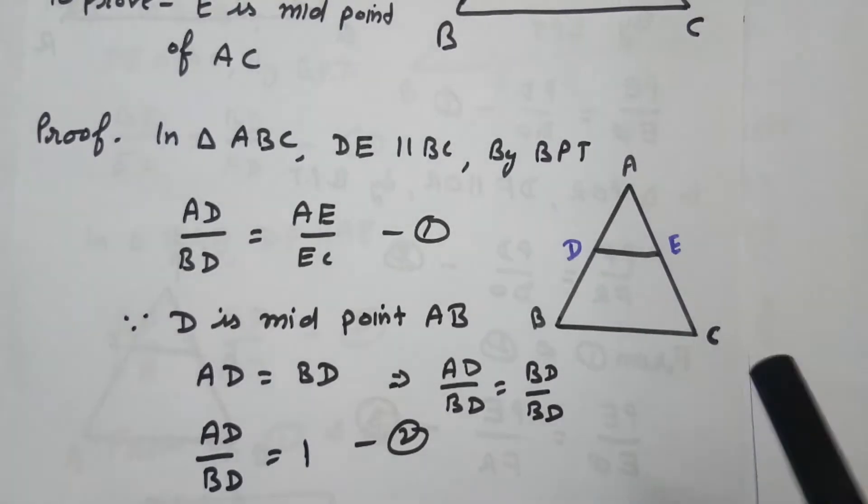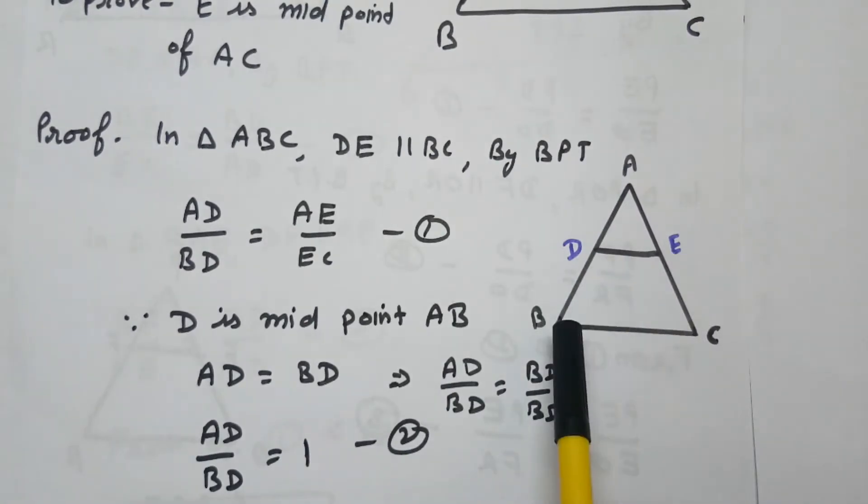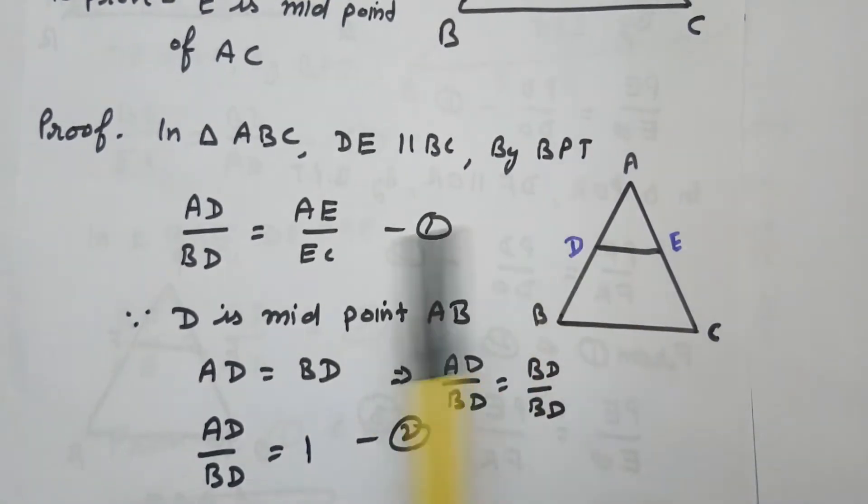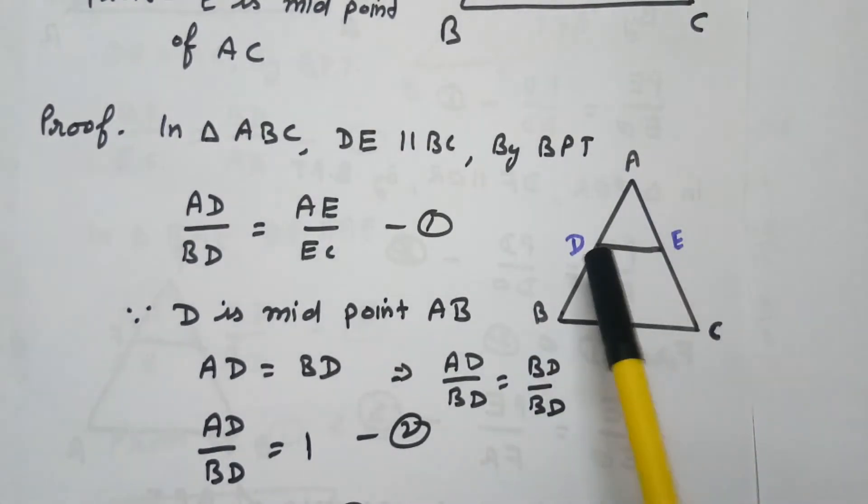Now we can say that in triangle ABC, DE is parallel to BC, so by BPT, AD over BD equals to AE over EC. And second thing, that D is the midpoint of AB.